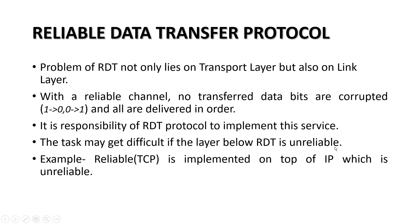To implement this service, RDT protocol is used, and the task may get difficult if the layer below RDT is unreliable. If unreliability is added to unreliability, more unreliability is formed — just like if the network layer is unreliable and the transport layer is also unreliable, these two lead to greater unreliability. For example, TCP is implemented on top of IP, which is a network layer protocol. Since IP is unreliable, TCP is used to give reliability to the network.